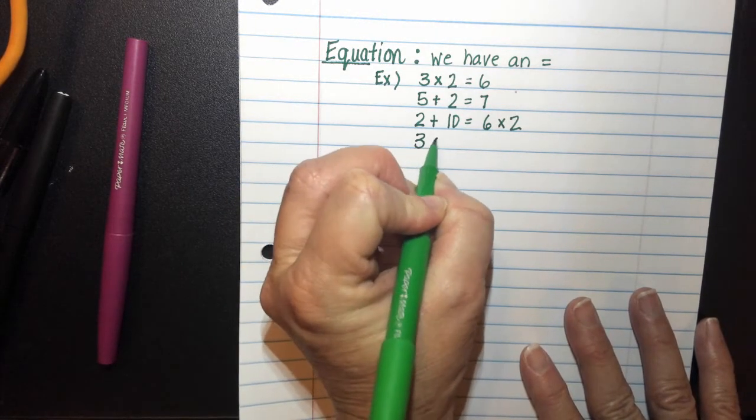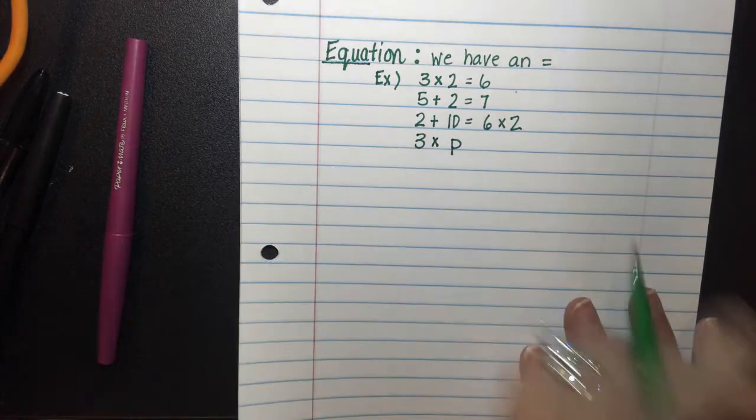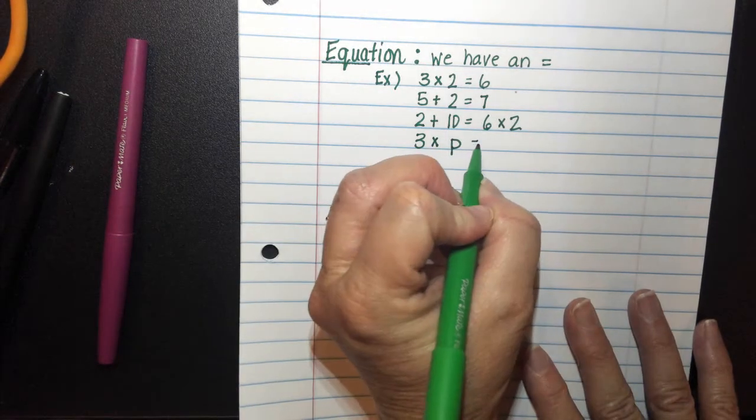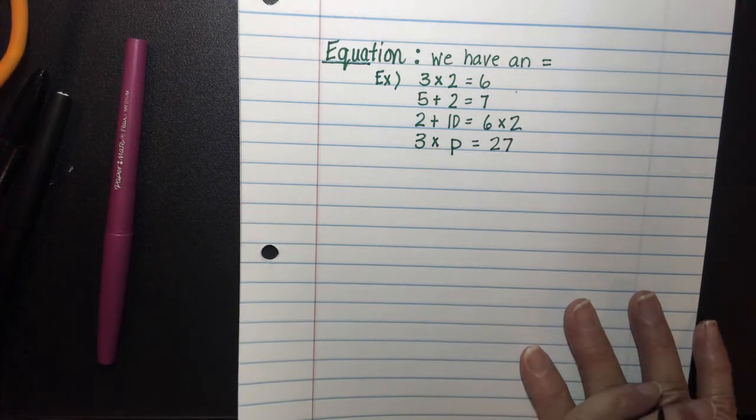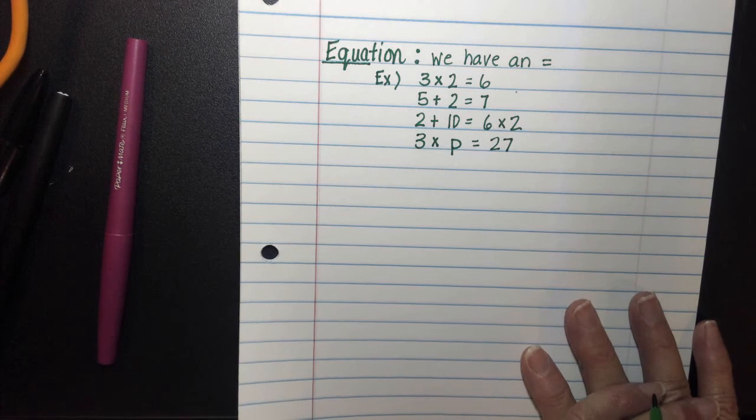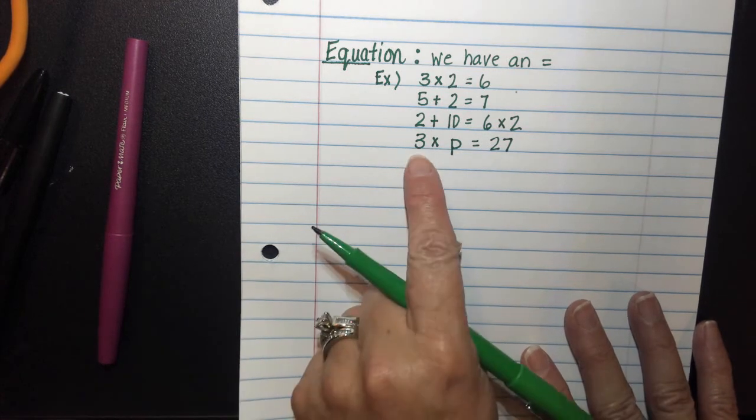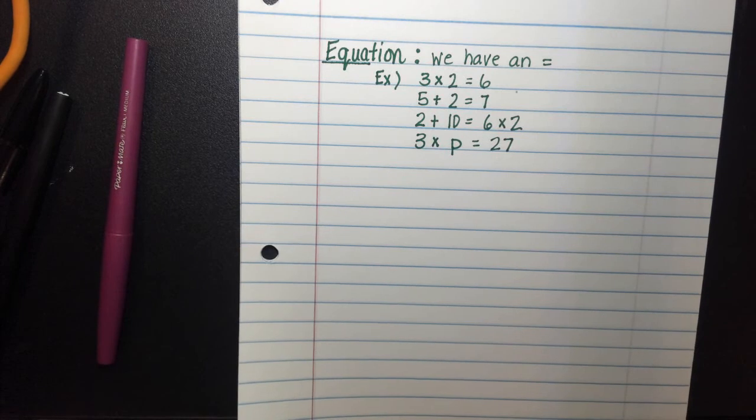And then finally, we might see some examples where they throw in a variable like this, and we have to find the value of P based on the relationships we know about 3 and 27. So an equation has an equal sign.